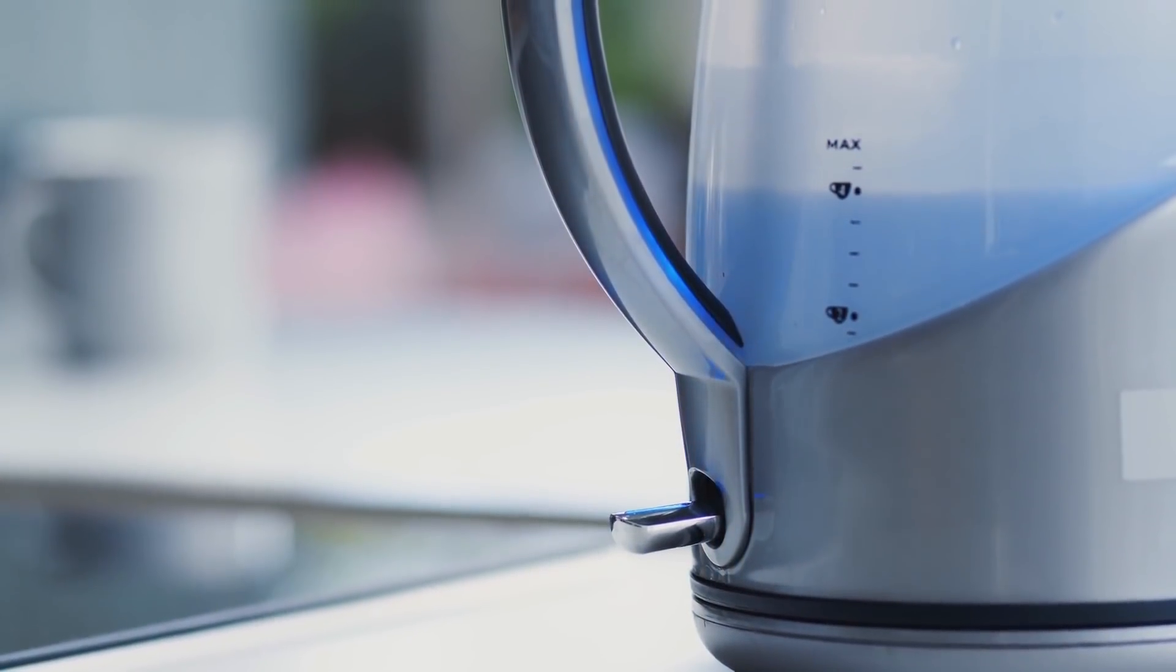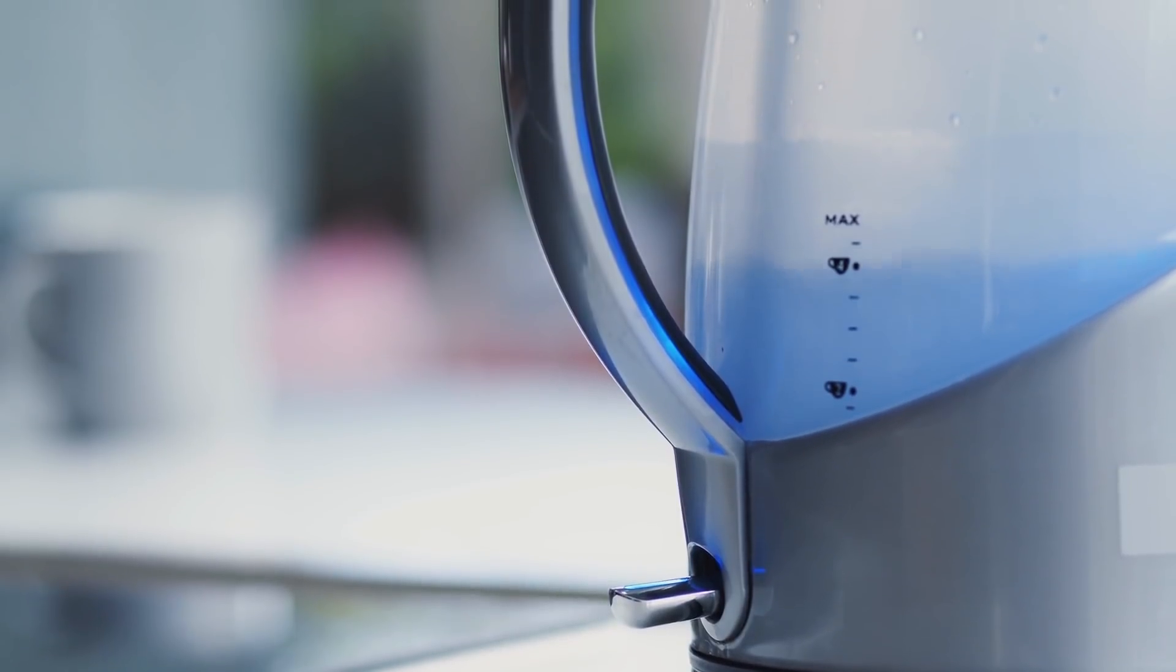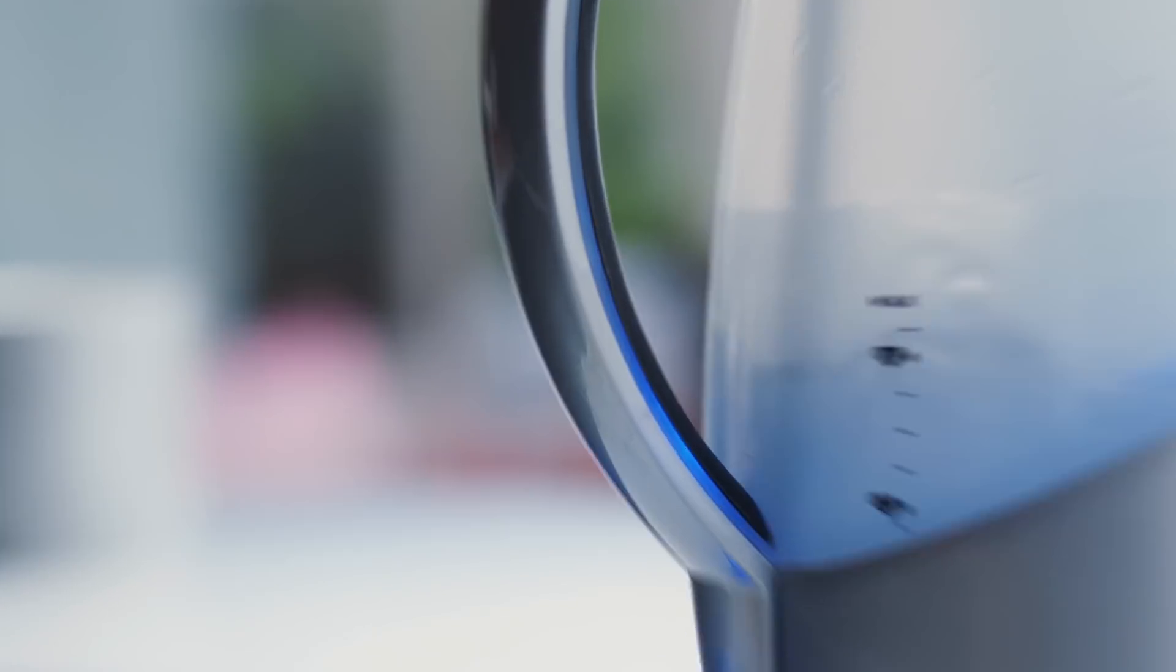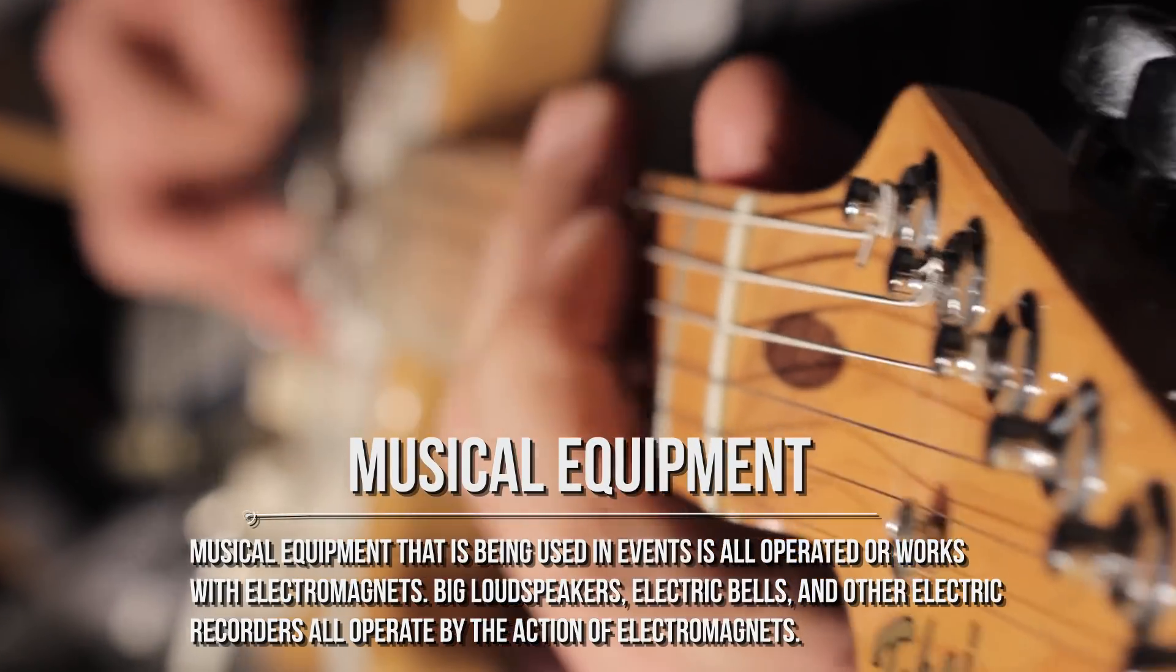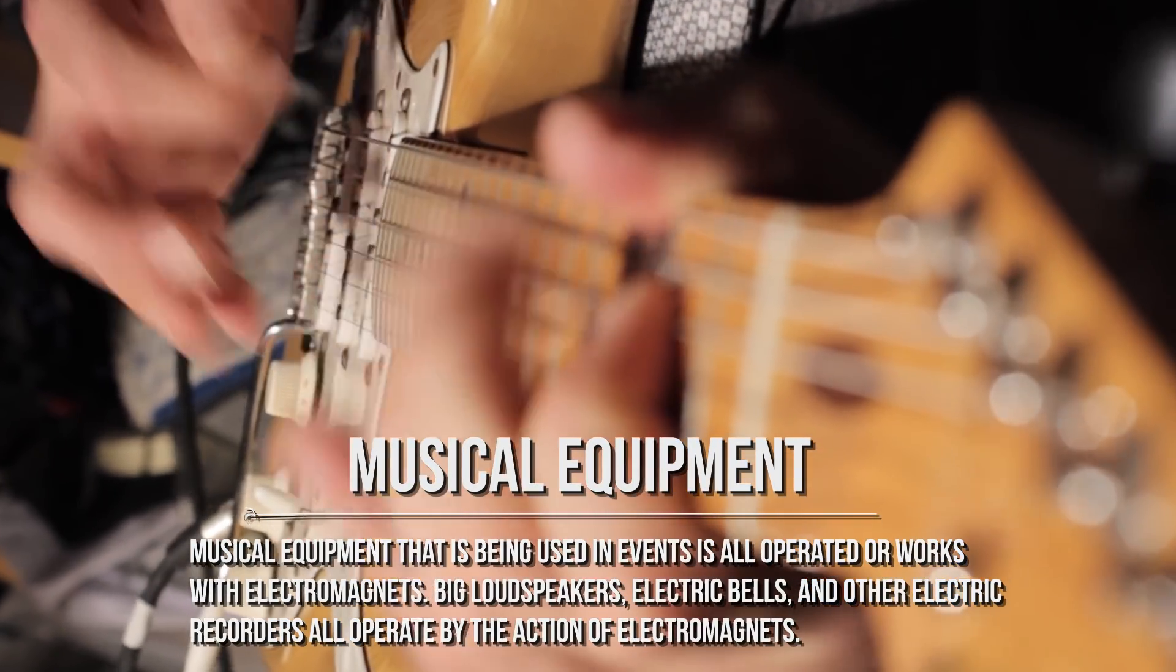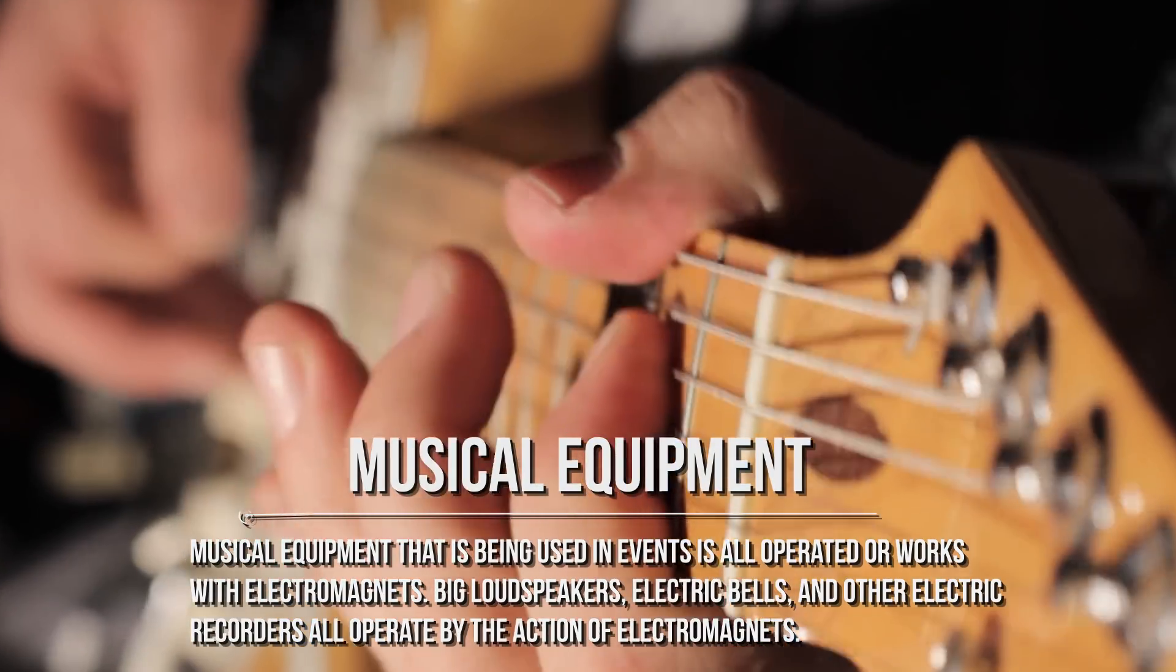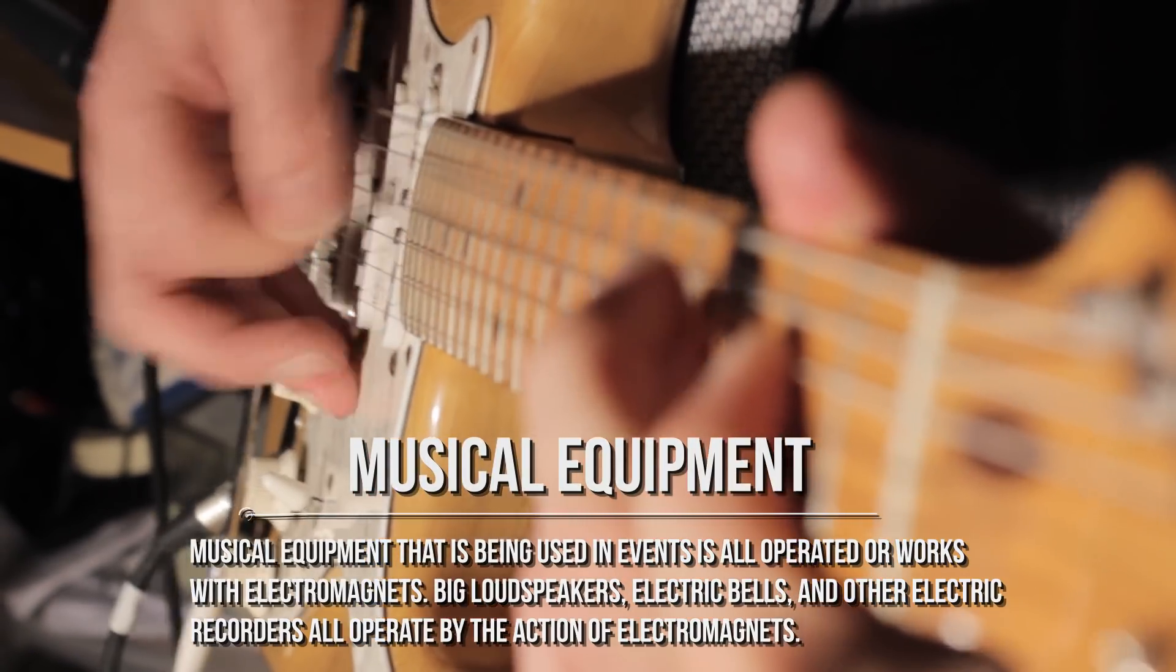Before ending the video, we want to remind you that nowadays electromagnetism derived technologies are all around us. Here are some examples. Musical equipment that is being used in events is all operated or works with electromagnets. Big loudspeakers, electric bells, and other electric recorders all operate by the action of electromagnets.